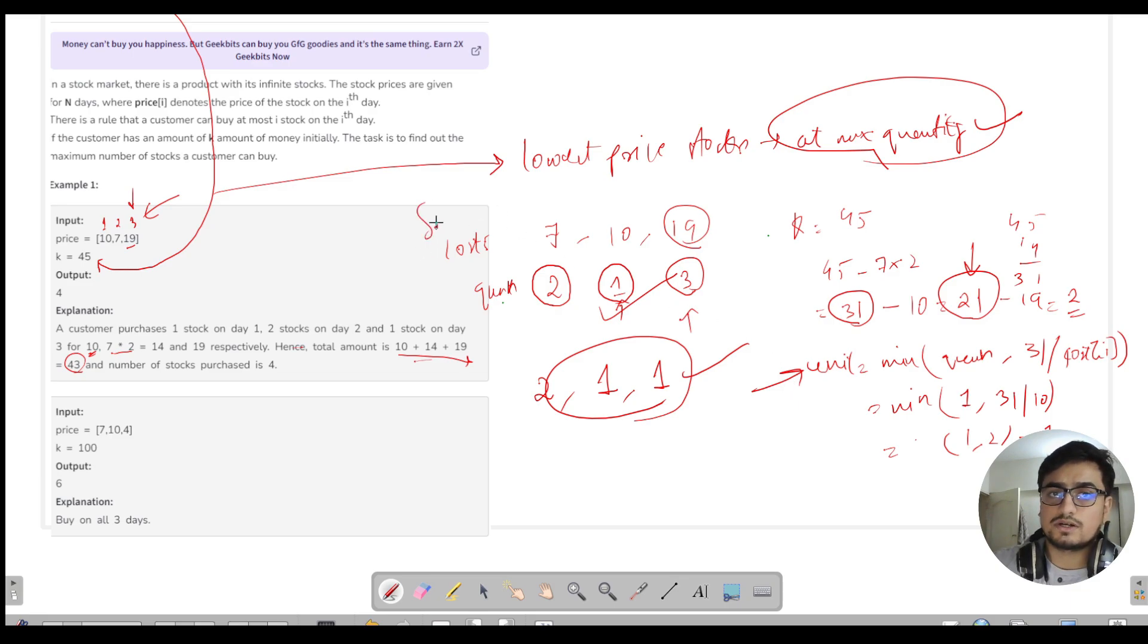You have to maintain finding the minimum and sort it. Since we need the price and its index which represents quantity, you need to make a custom pair data structure and sort it according to cost. Now pause this video, try some more runs, and once satisfied with the logic, try to code this approach yourself.